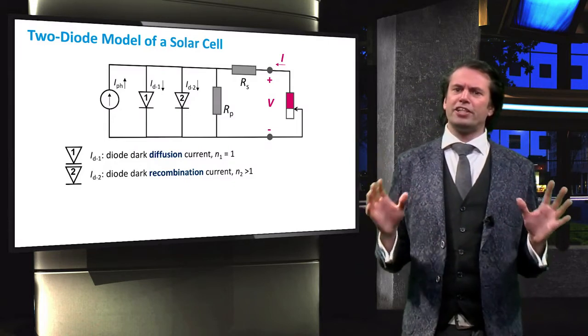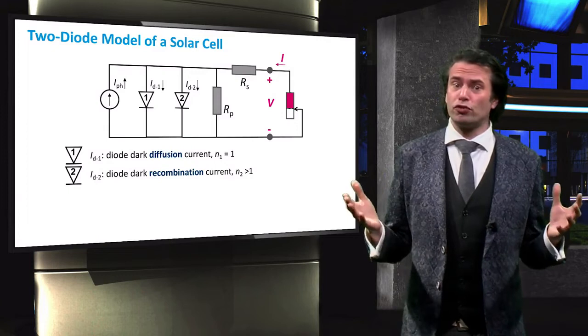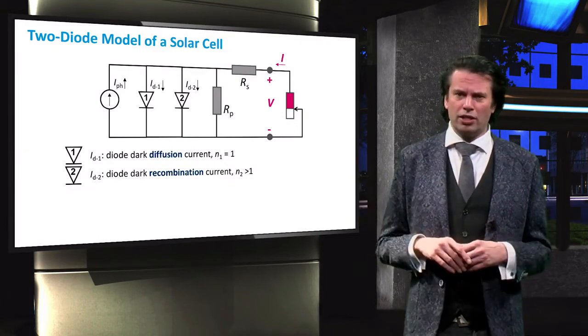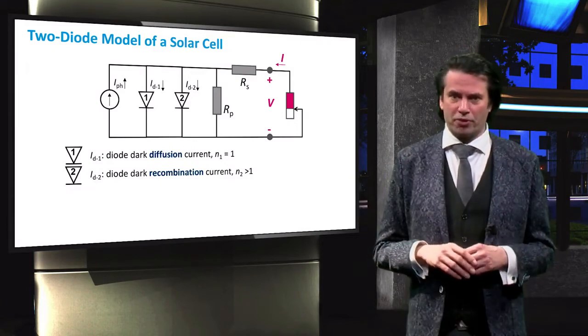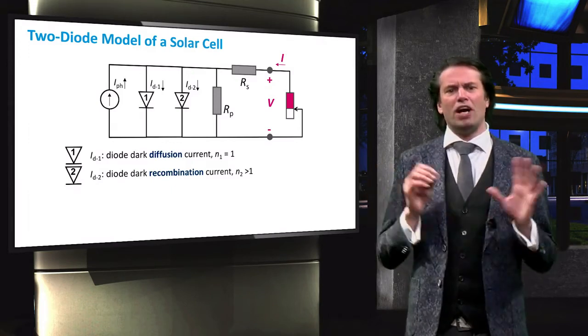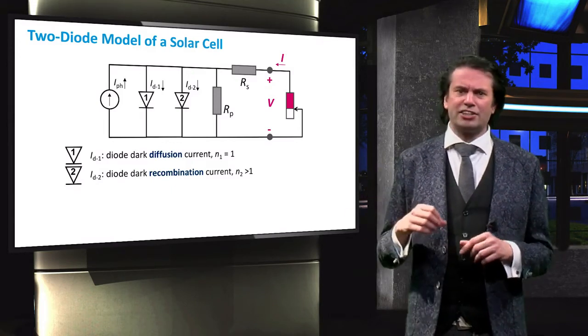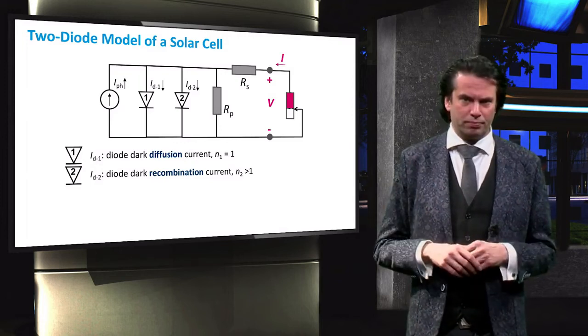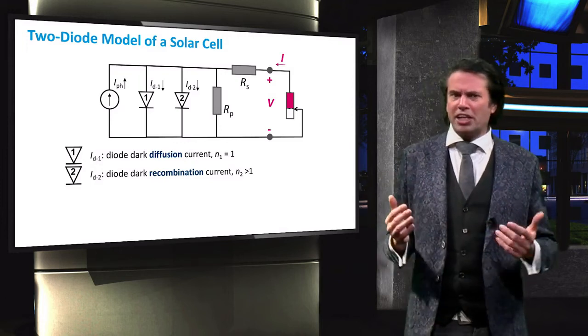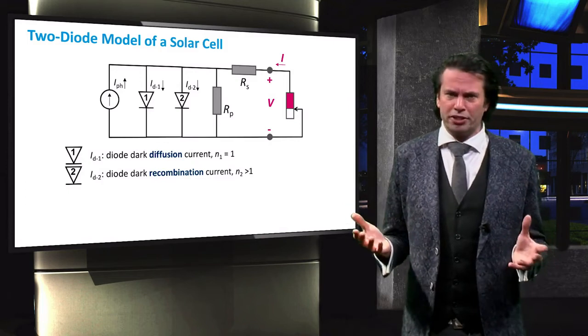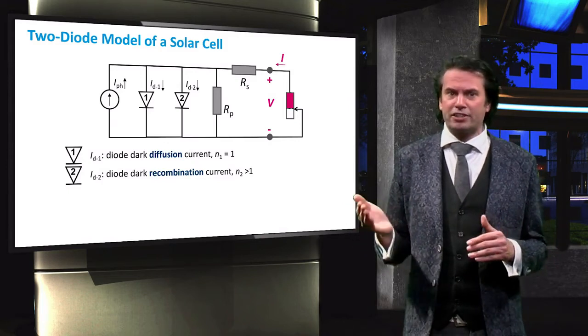The reason for this is that there are two sources for current sink in a solar cell and they need to be modeled separately. Diode 1 represents the dark diffusion current. This diode has an ideality factor of 1. Diode 2 represents the dark recombination current and will have an ideality factor greater than 1.